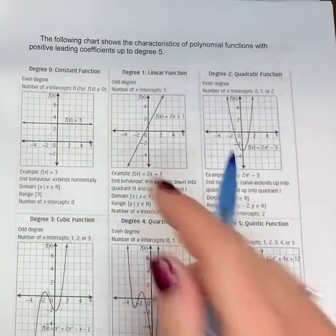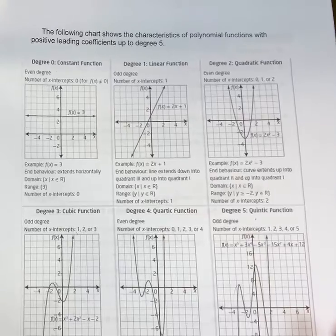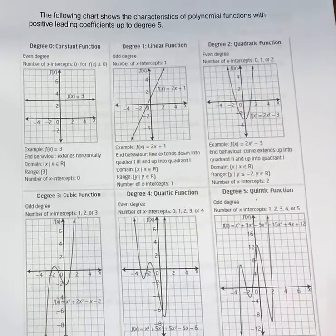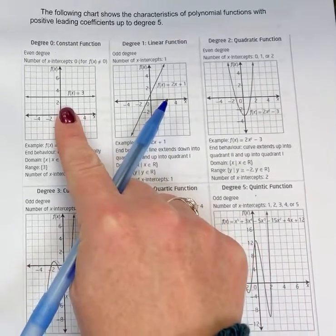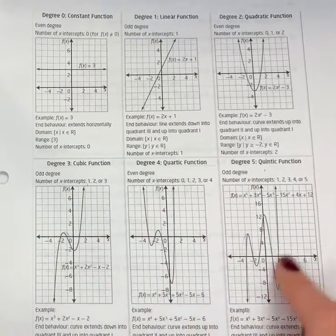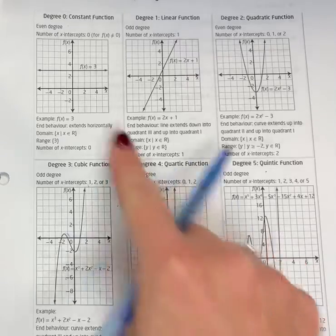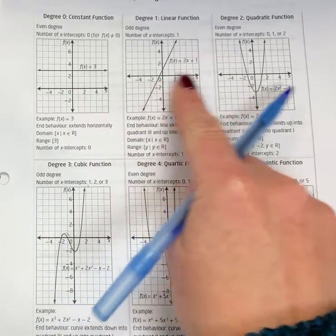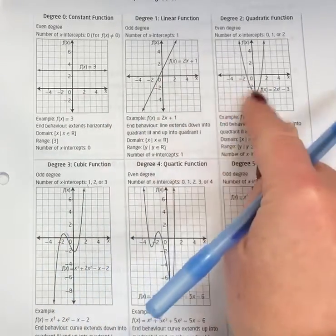We're going to look at this table here. It shows the characteristics of polynomial functions with positive leading coefficients up to degree five. We have degree zero in the corner to degree five, and I'm going to focus on the bottom three—cubic, quartic, and quintic—because this is what happens in polynomials. We're used to our constant function, our linear, and our quadratic, but we will still use those to compare.